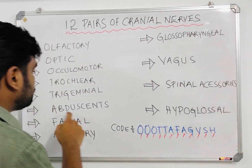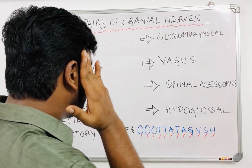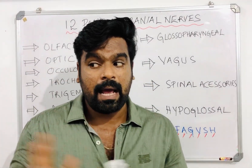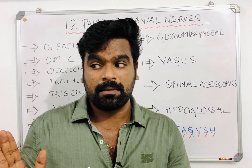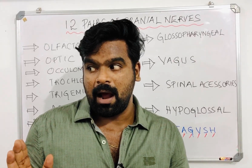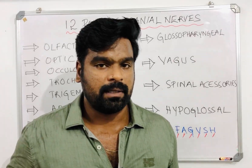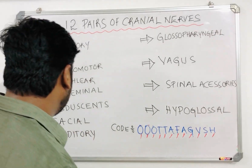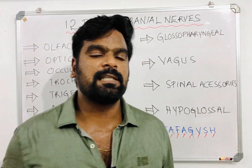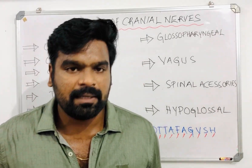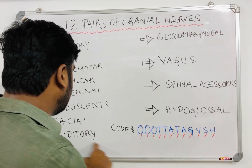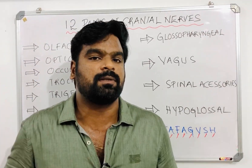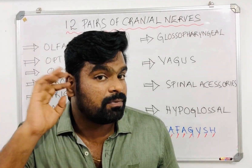Abducens nerve is for lateral eye movements — abducting your eyes sideways. The facial nerve is for facial expression and taste sensation. The auditory nerve, also called vestibulocochlear or acoustic nerve, is for hearing.